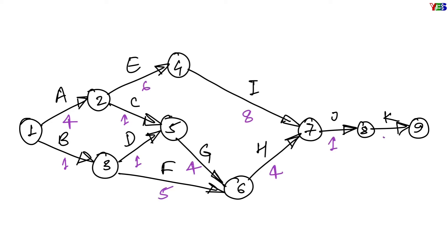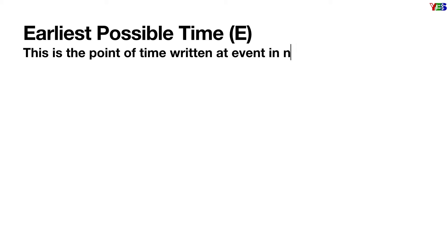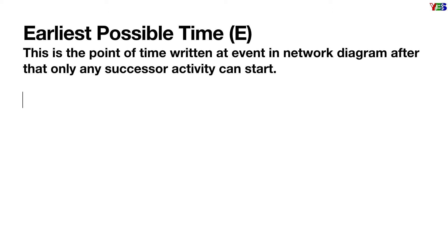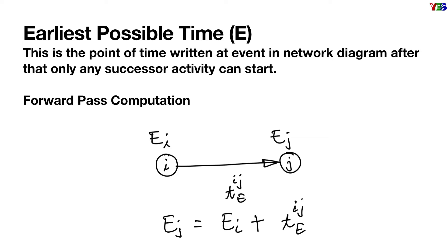Here we have A to K different activities with their expected activity completion time in hours. First, let us know what is earliest possible time. This is the point of time written at an event in the network diagram, after which any successor activity can start. To compute this, we go for forward pass computation. In this process, we calculate earliest possible time at the head event of any activity by adding earliest possible time at the tail event of this activity with its expected completion time. Here I and J are tail event and head event respectively of any activity, and TEIJ is the expected activity completion time. If EI is the tail event earliest possible time and EJ is the head event earliest possible time, then EJ = EI + TEIJ.